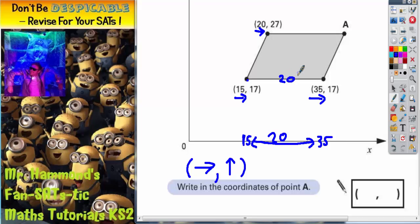Now what do we know about a parallelogram? Well, we know that opposite sides are equal. So if the bottom side has a length of 20, the top side must have a length of 20. Now if we're starting on 20 here on this point and we have a length to continue across of 20, 20 plus another 20 will take us to point A. So 20 plus another 20 is 40. So point A must be 40 across, so the first part of the coordinate is 40.